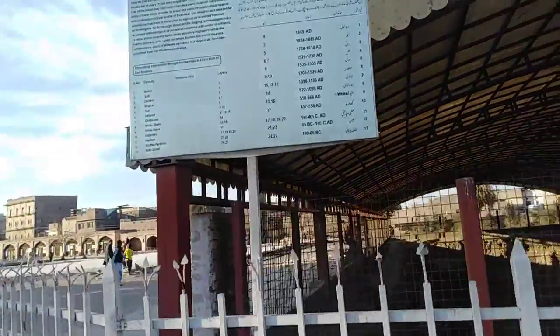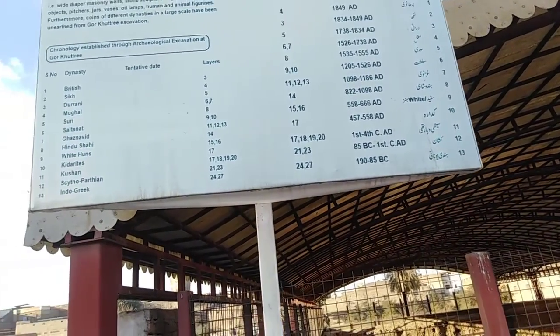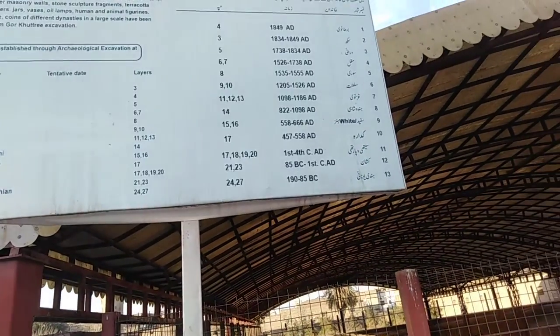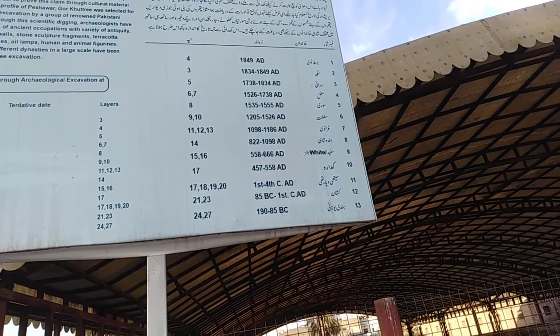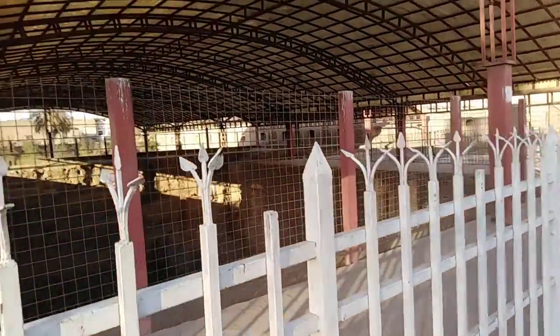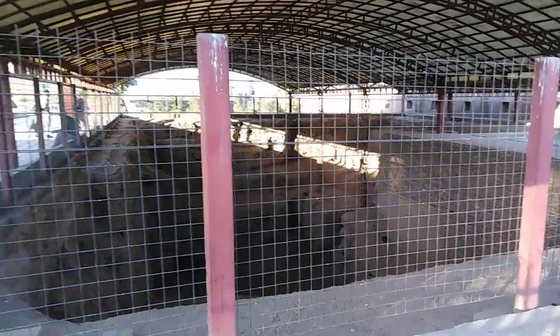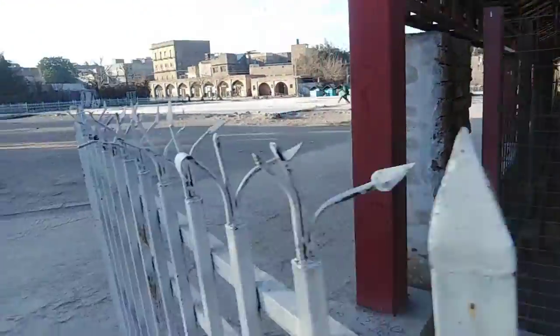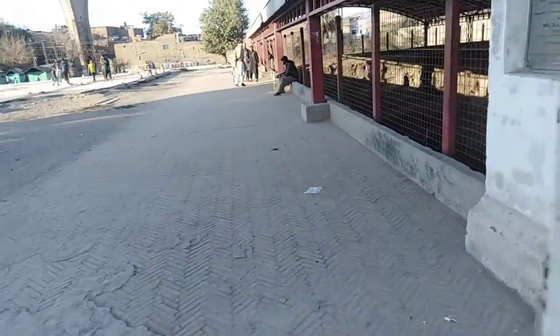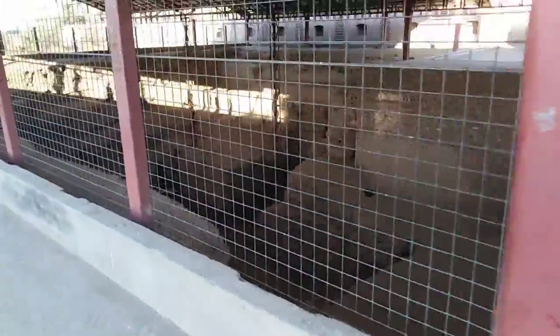This is the history of Peshawar — it was already established almost 190 years before the birth of Hazrat Isa, Alayhi Assalam, and up to 85 years BC it was governed by the Indo-Greeks. This is the place where historians have found different layers of ancient Peshawar. These layers indicate different kinds of dynasties and periods of peoples that have passed through here.